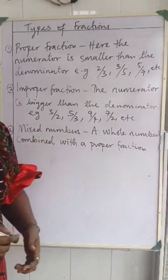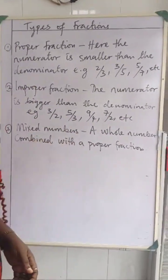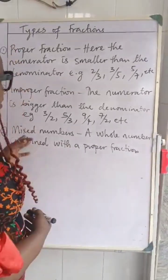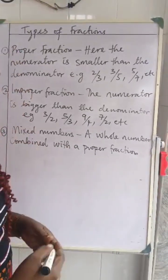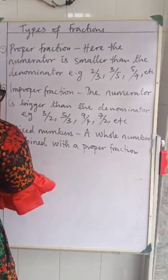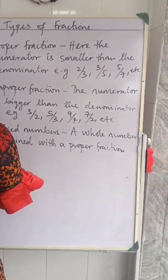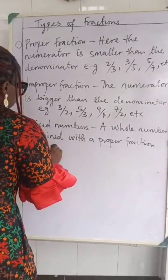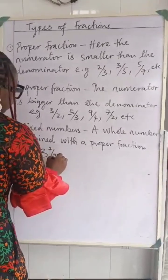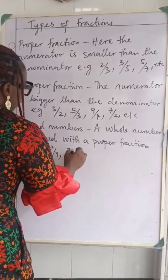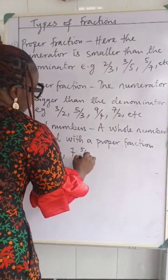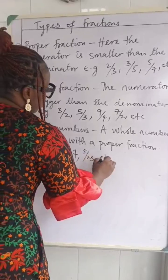Number three: mixed numbers. That is a whole number and a proper fraction — the combination of a whole number with a proper fraction. An example is 1 and 2 over 5, 3 and 7 over 9, 7 and 5 over 23, and so on.